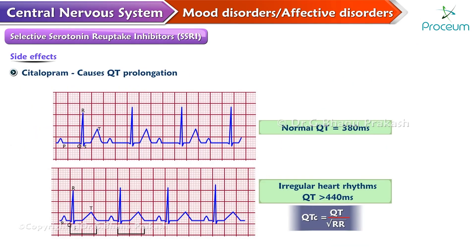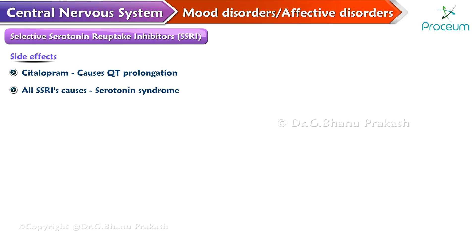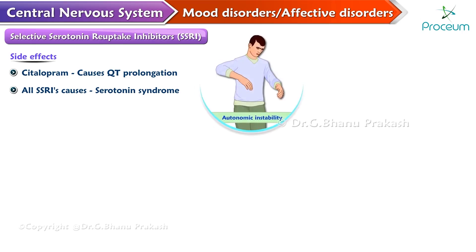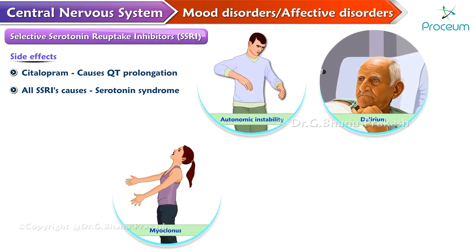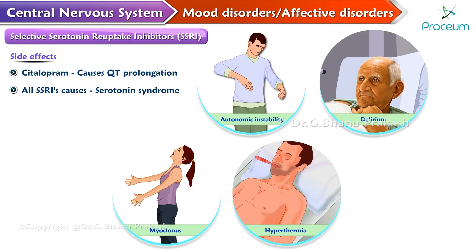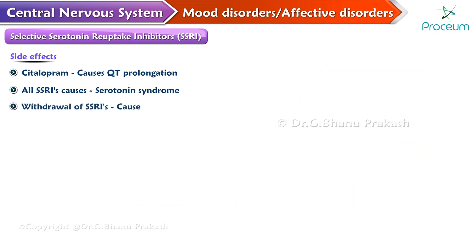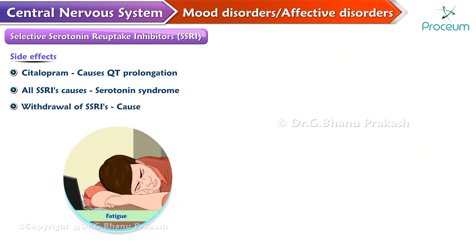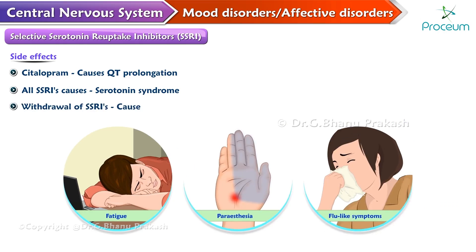Citalopram causes QT prolongation, and all SSRIs can cause serotonin syndrome, characterized by autonomic instability, delirium, myoclonus, hyperthermia, and coma. Withdrawal of SSRIs can cause fatigue, paresthesias, and flu-like symptoms.